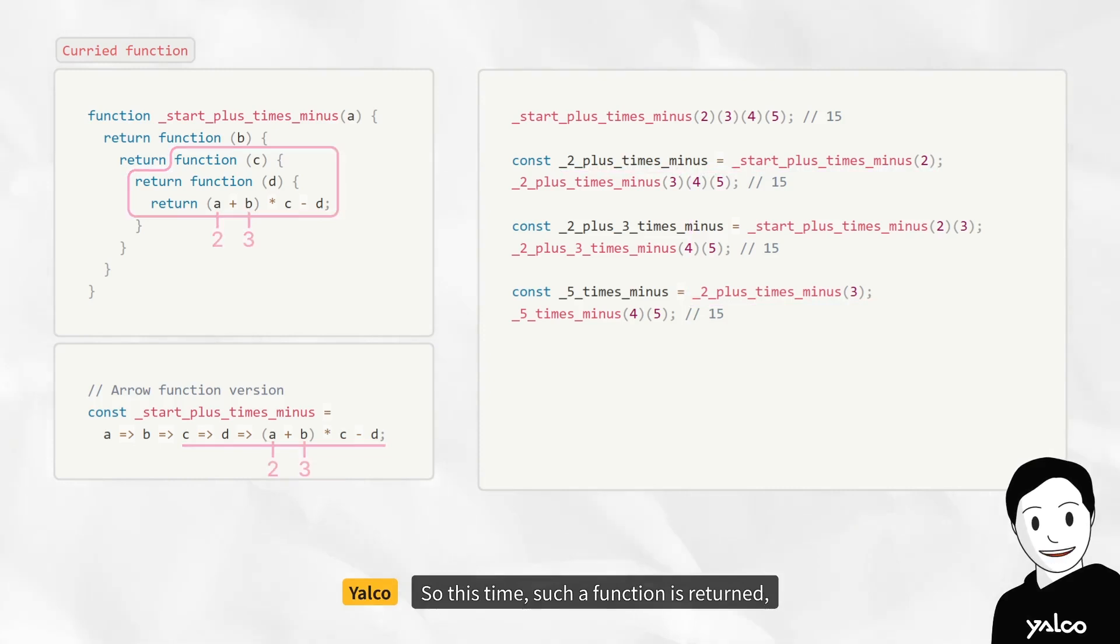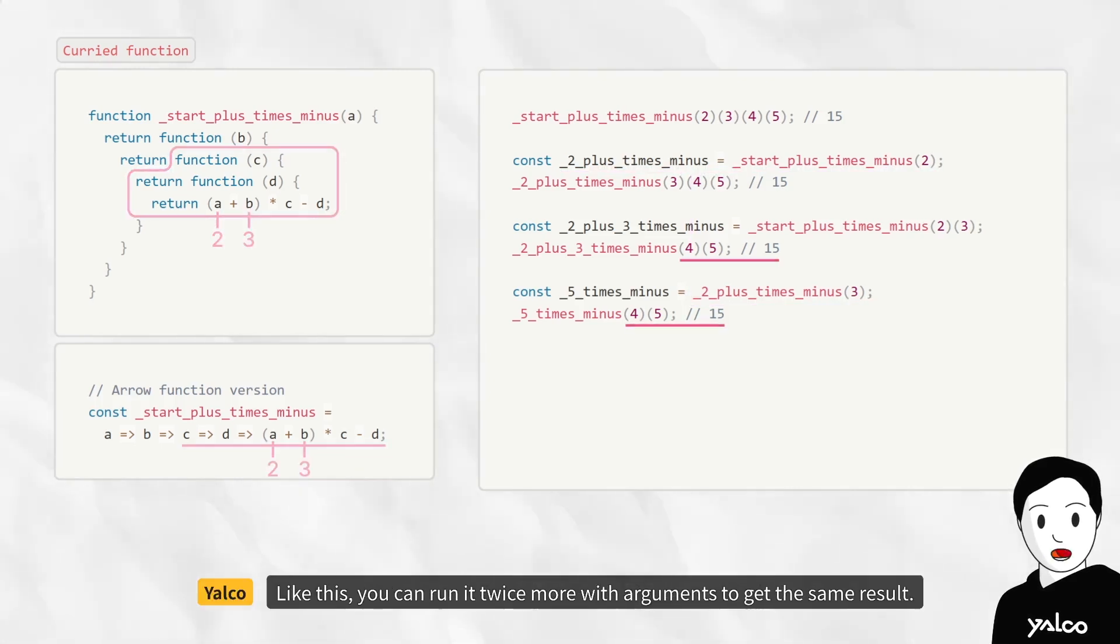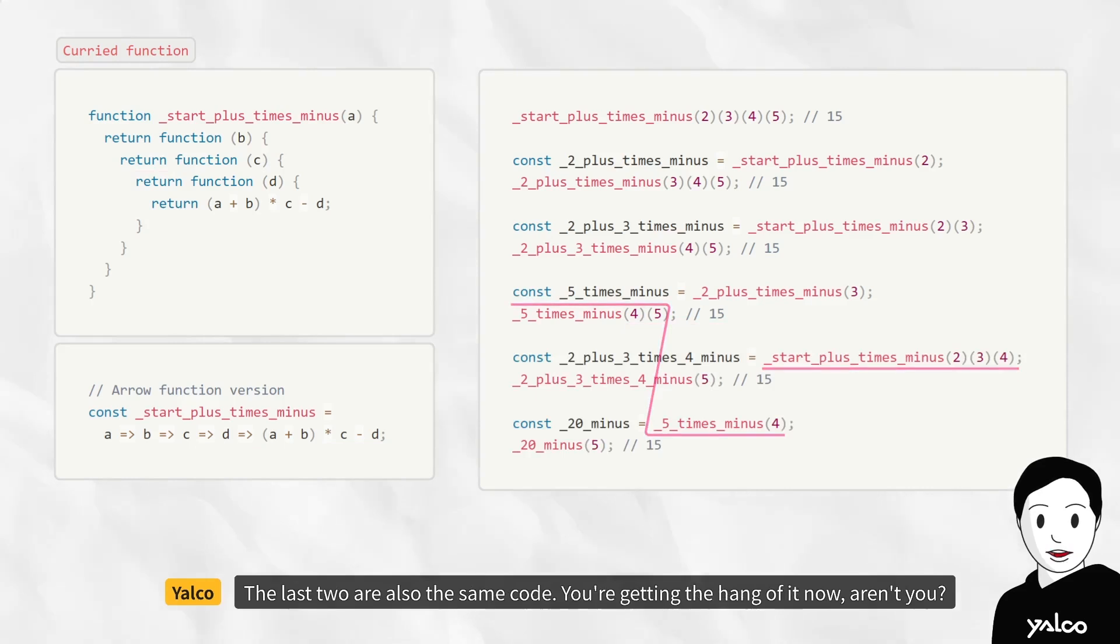So this time, such a function is returned. Like this, you can run it twice more with arguments to get the same result. The last two are also the same code. You're getting the hang of it now, aren't you?